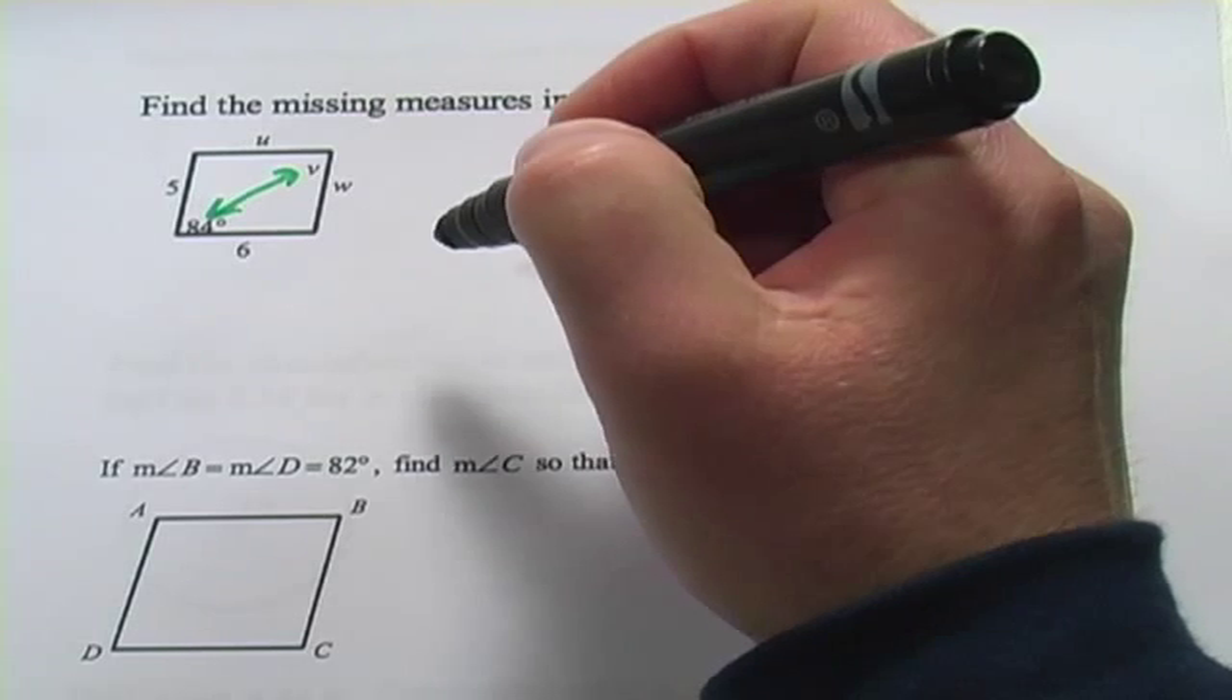Another cool thing about parallelograms is that the opposite angles, so the angles that are across diagonally from each other, are also the same. So if this guy's 84, this guy's going to be 84. And whatever this guy is up here, this guy's going to be the same down here.